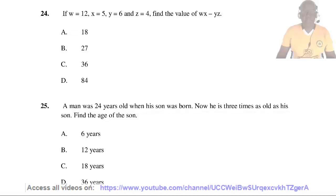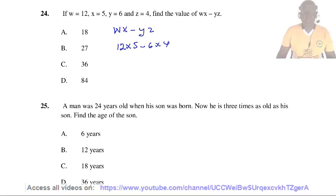Question 24. If W equals 12, S equals 5, Y equals 6, and Z equals 4, find the value of WS minus YZ. Substituting: W times S = 12 times 5 = 60, and Y times Z = 6 times 4 = 24. So 60 minus 24 equals 36. The right answer is C.